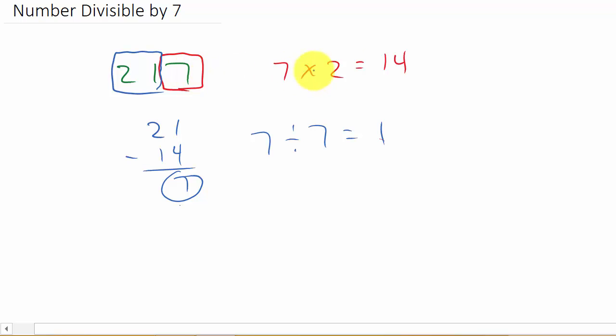Whenever you take the last digit and you double it, and then you subtract it from the remaining digits in the number, if you get 0,